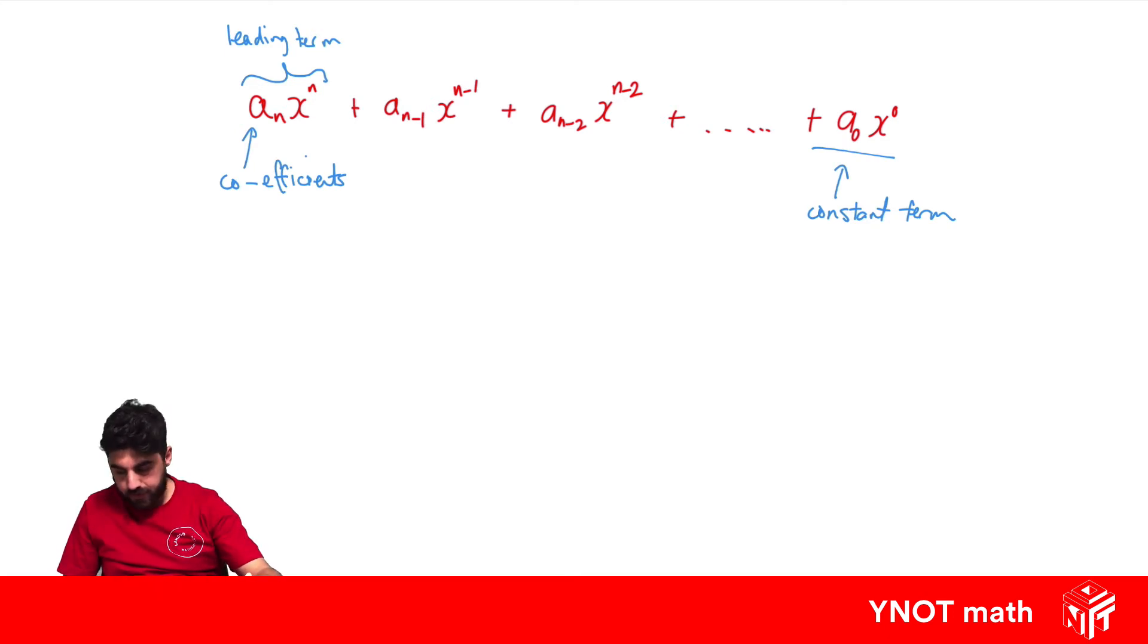So let's look at something. If we just have 3 on its own, this is just a constant, and that's where we're going to start. Now if we have 3x plus 1, it's going to be linear, and we can see our highest power of the variable is 1. So again, we're talking about our leading term having a coefficient of 3 and a constant term of 1.